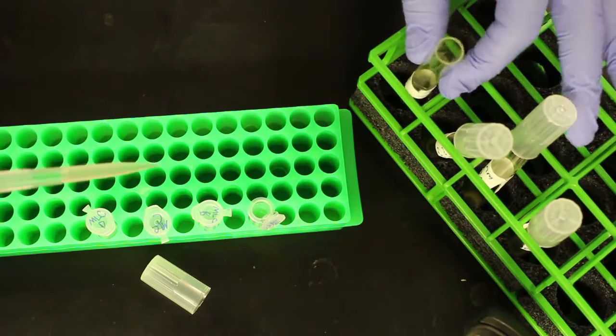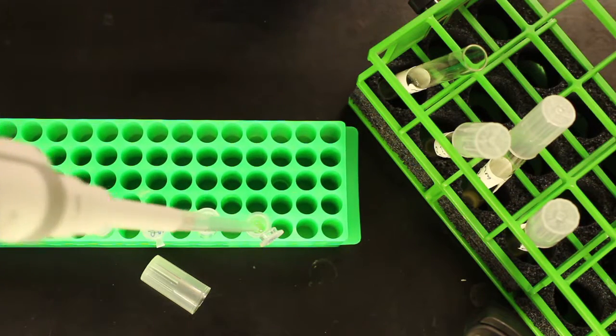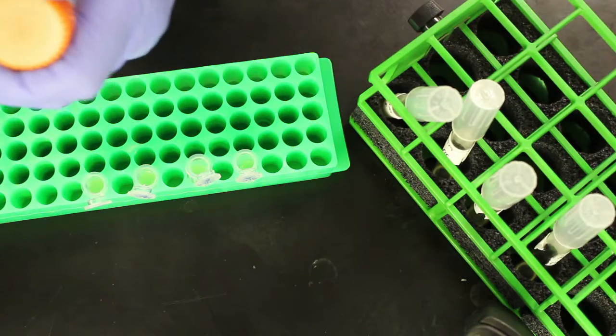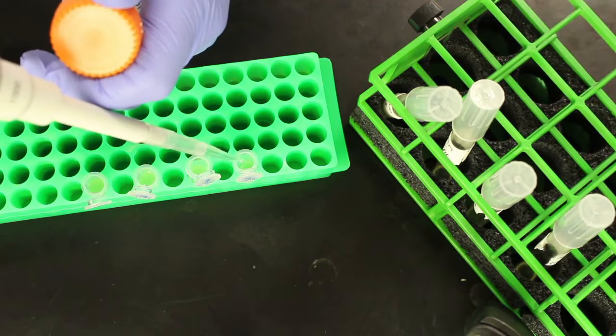After you have a liquid culture of your bacteria, you will make a 25% glycerol stock solution. Take 500 microliters of the overnight culture and mix it with 500 microliters of 50% glycerol solution in a 1.7 milliliter tube.